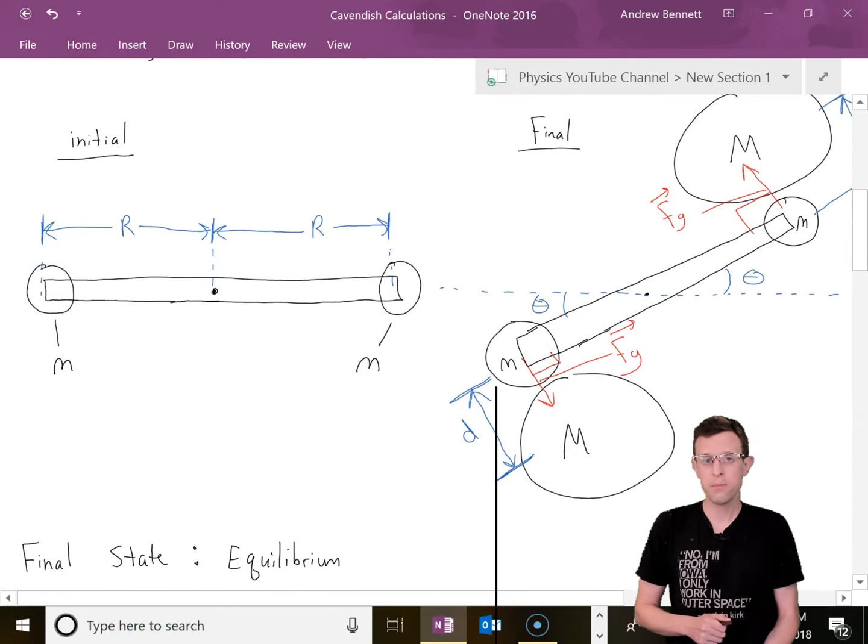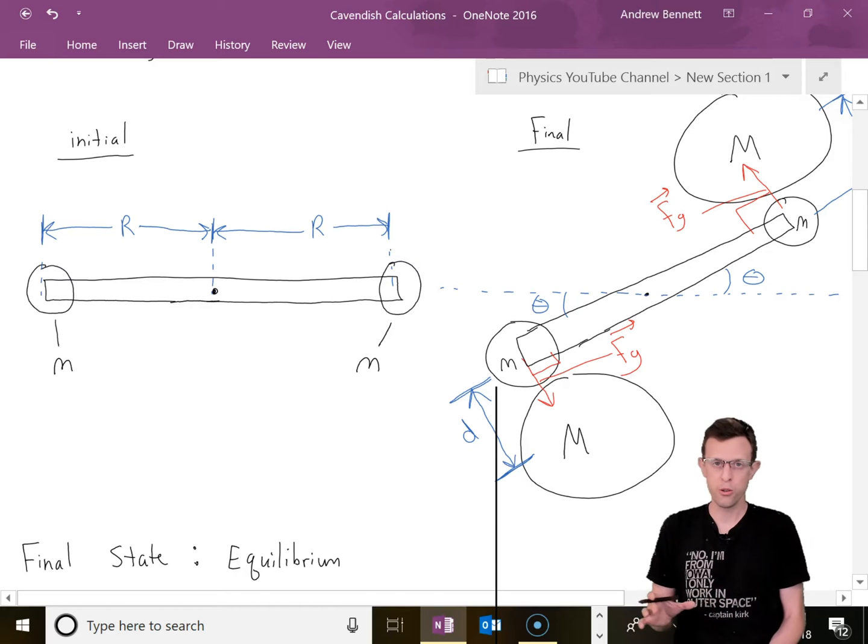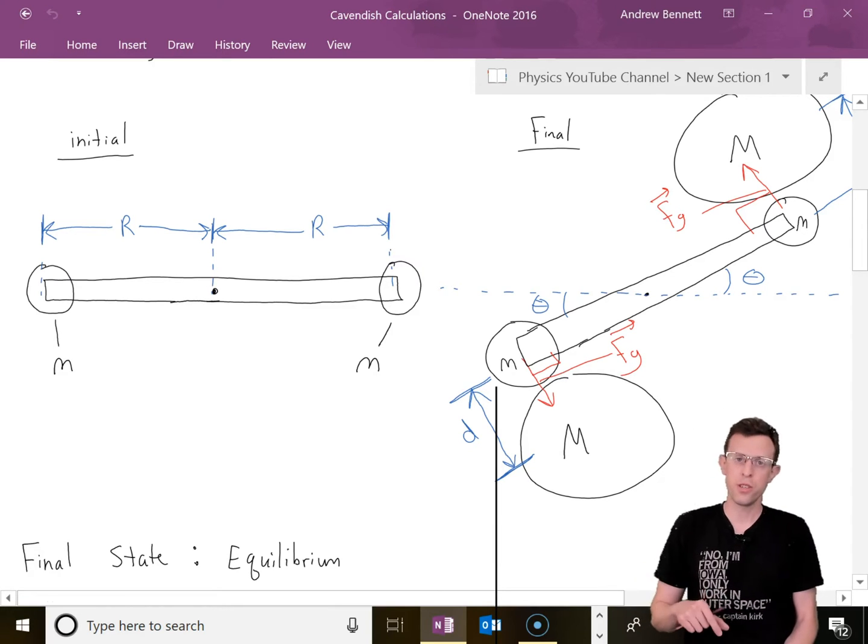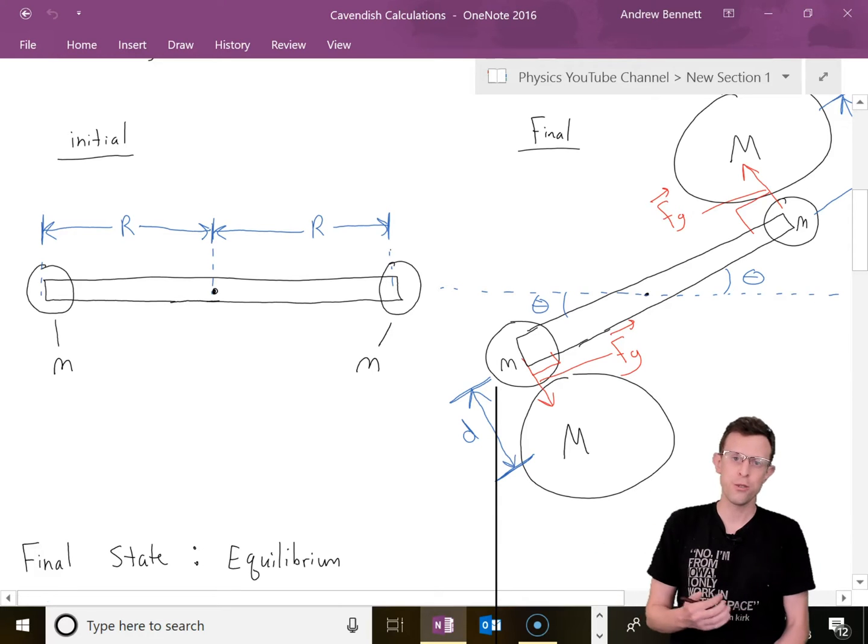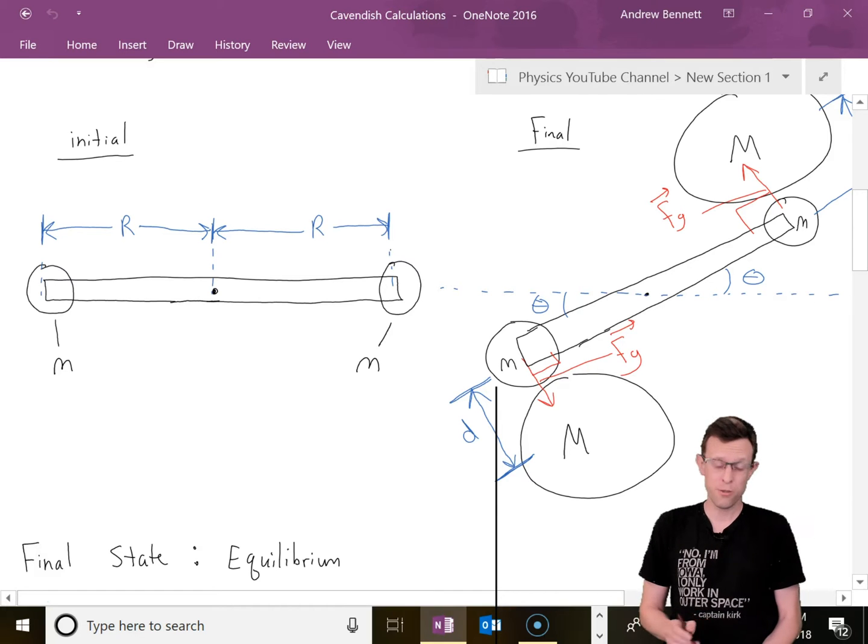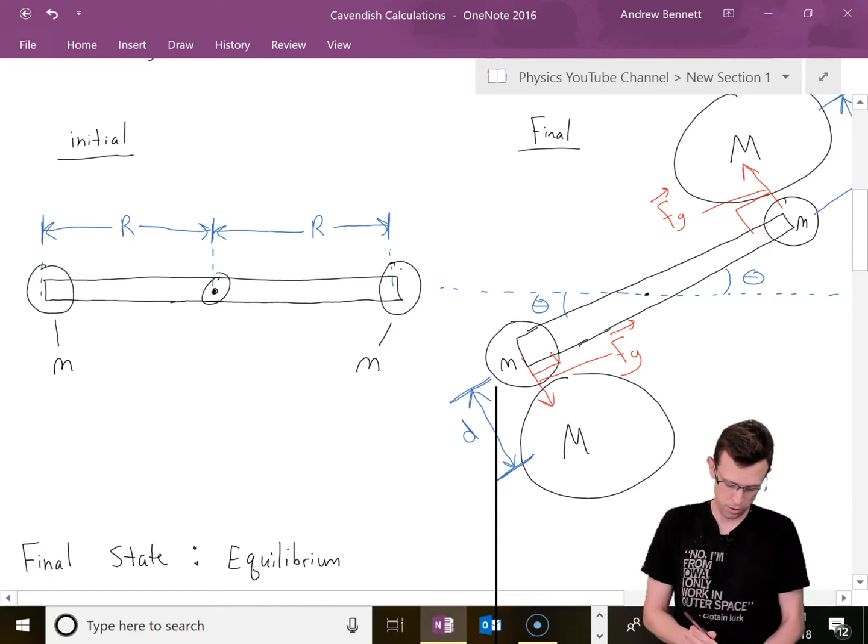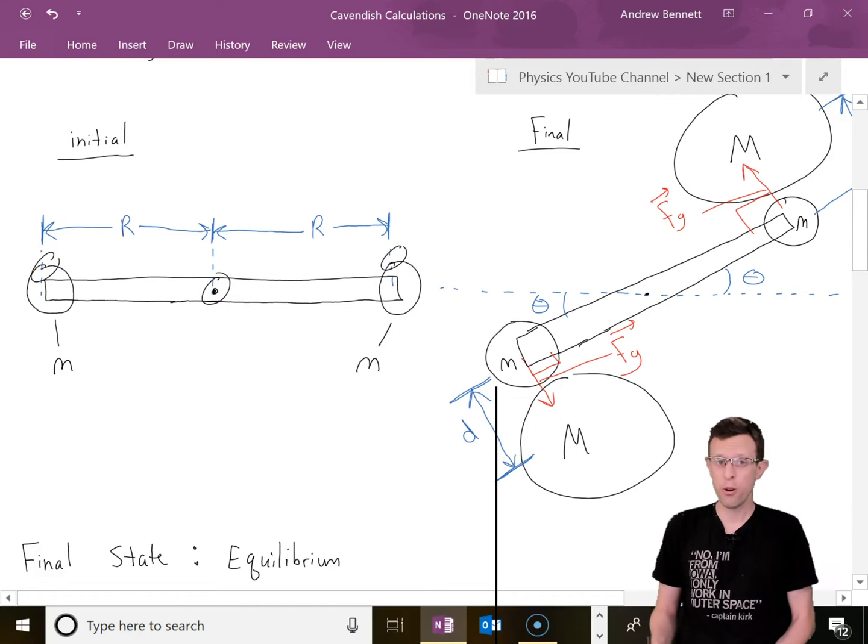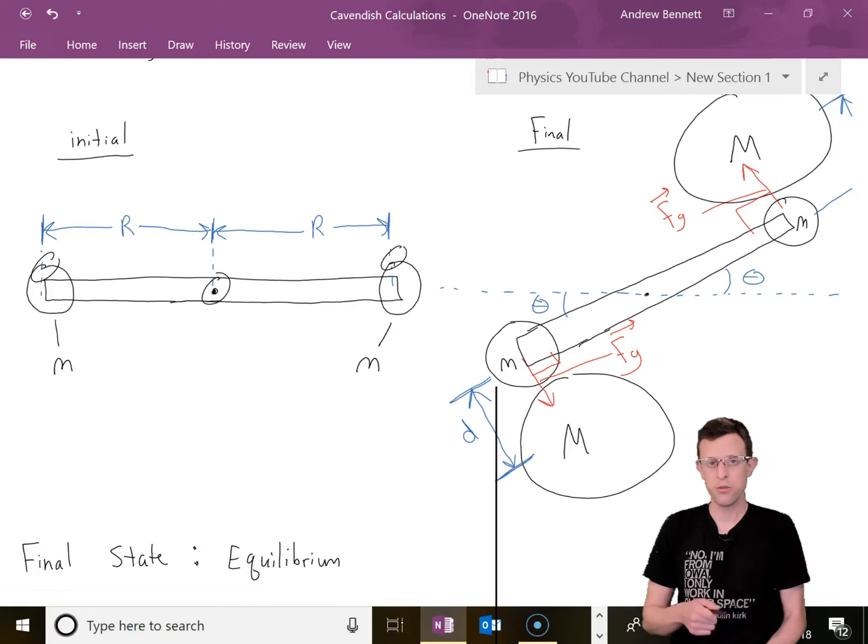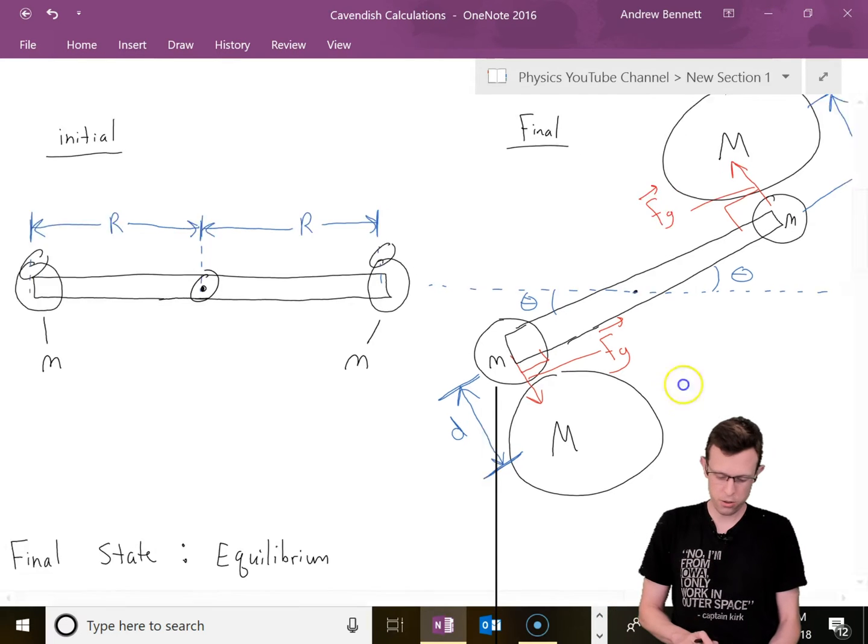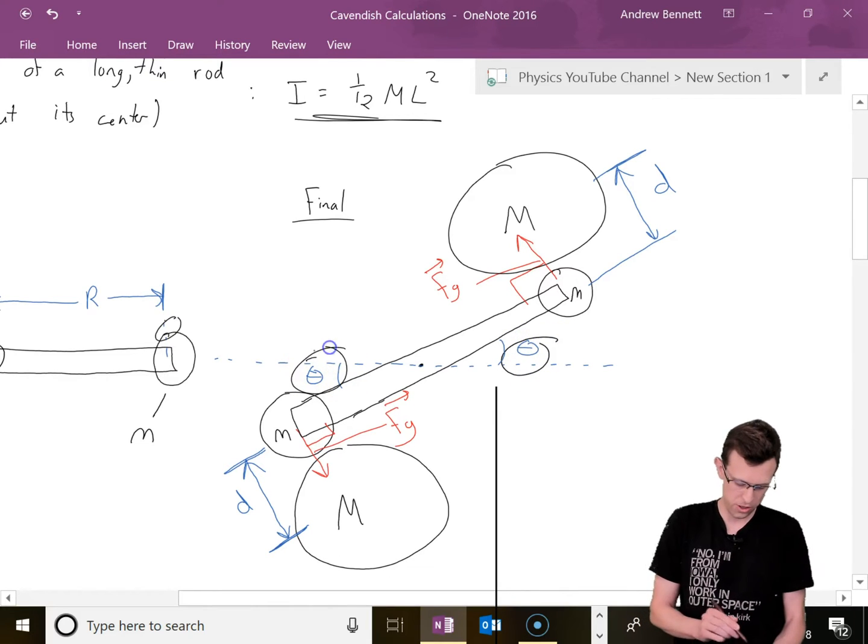Our basic setup, this is a top-down view. We're going to have the rod suspended from the string with two masses on the end, lowercase m for the smaller masses. We'll have big masses nearby, capital M, that provide the gravitational force causing the whole thing to twist. The distance from the center to each small mass is capital R. After we apply a torque, the whole thing twists by some angle theta.